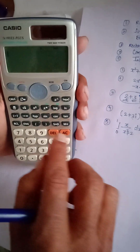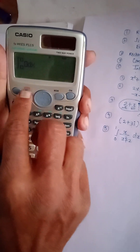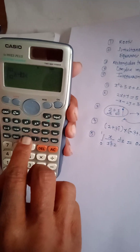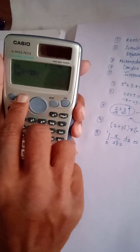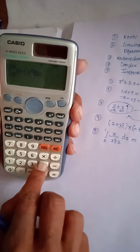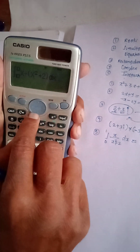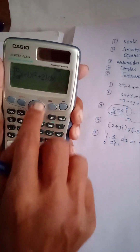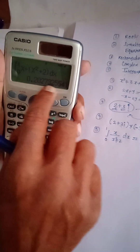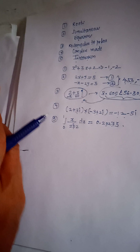On the FX-991EX, press the integration sign. Enter x by pressing Alpha and the closing bracket. Divide by the bracket containing x squared plus 2 — press Alpha, closing bracket, then x-squared, then plus 2, and close the bracket. Press the limits key, enter the lower limit 0, then the upper limit 1, and press Equals. The answer of the integration is directly displayed as 0.20273.